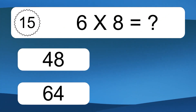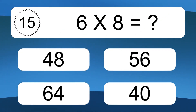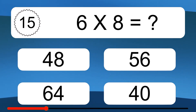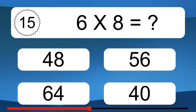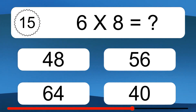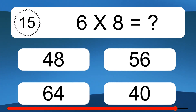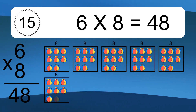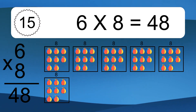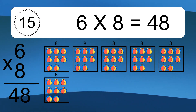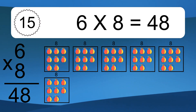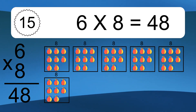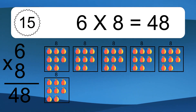6 times 8 equals what? 6 times 8 equals 48. We have 6 boxes, and each box has 8 colorful balls inside. If you count all the balls in all the boxes together, you will have 6 times 8 balls. This equals 48 balls.